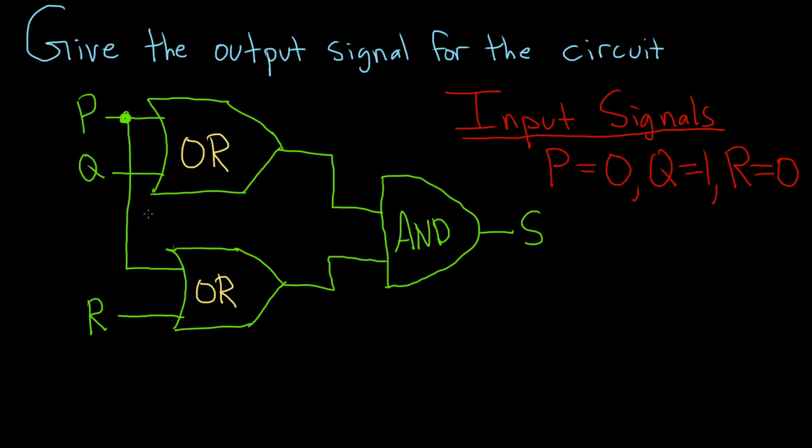Give the output signal for the circuit. So we have the input signals here on the right: 0, 1, and 0.